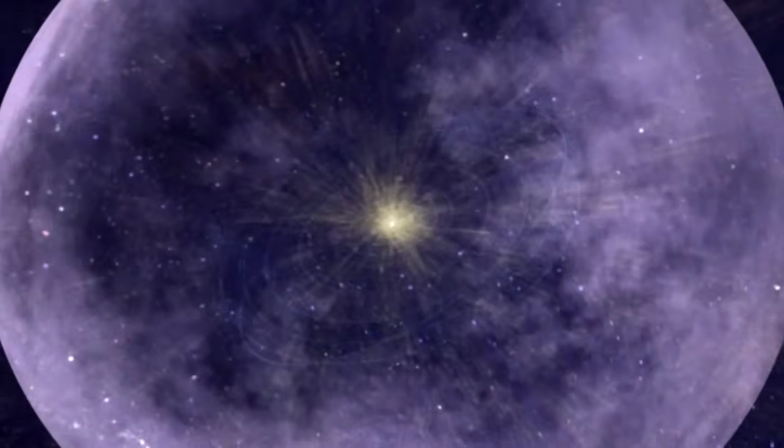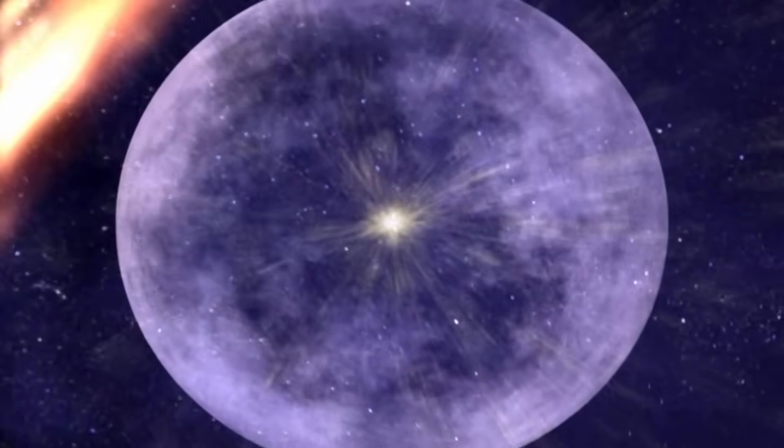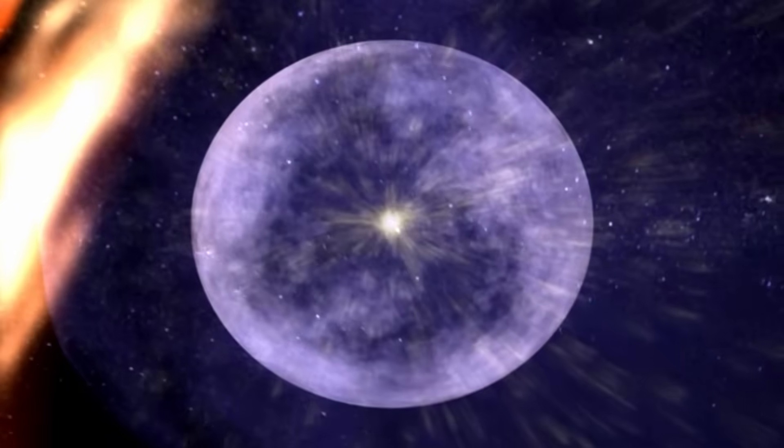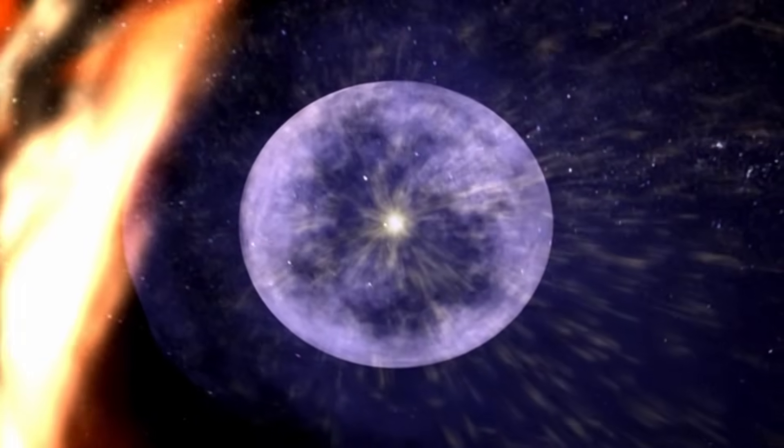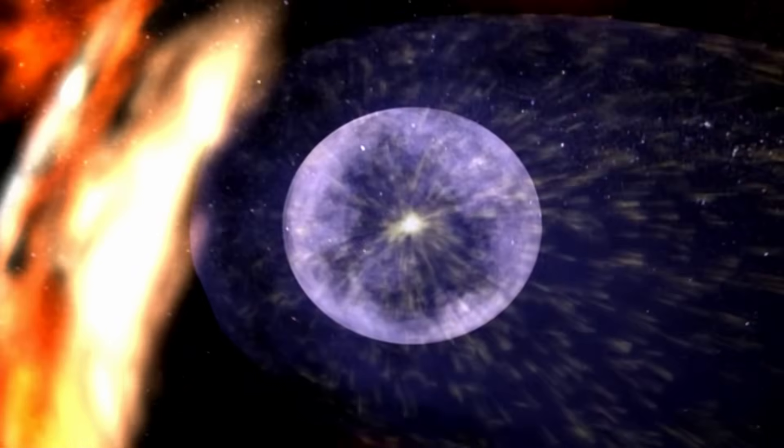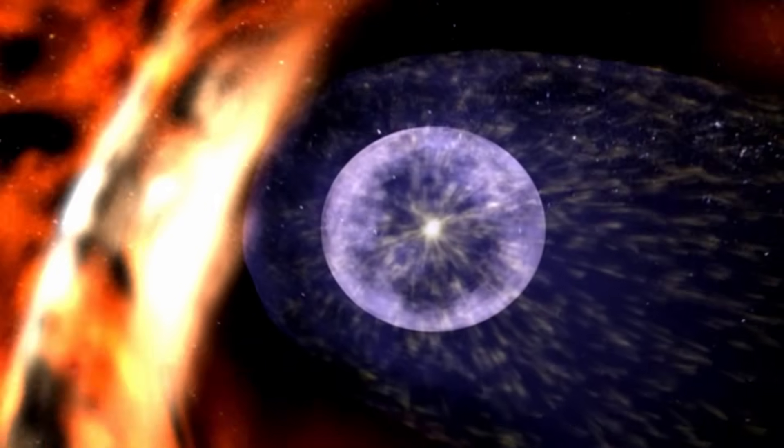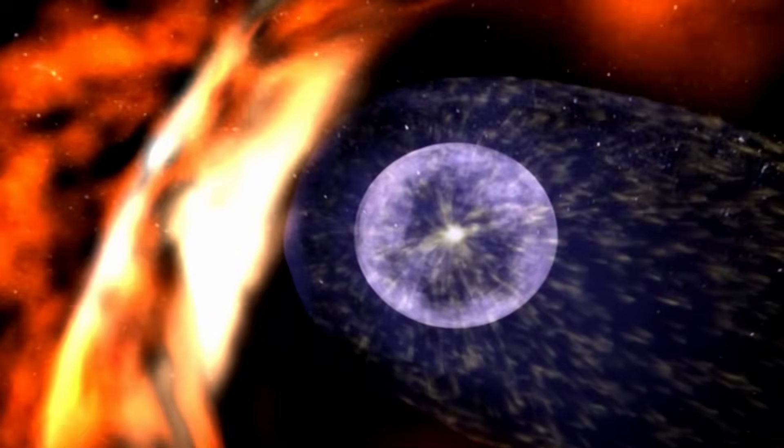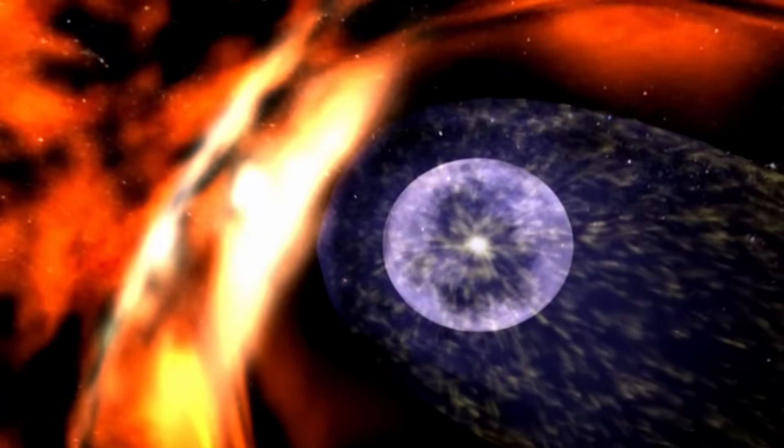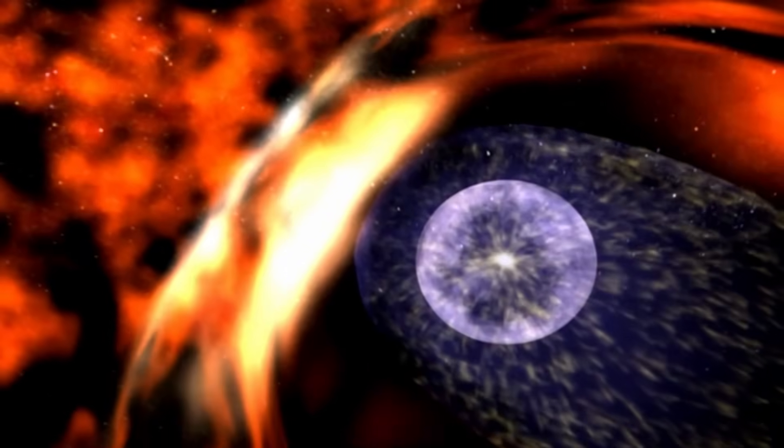Scientists believe there are two primary mechanisms behind this heating. The first is plasma compression. The slowing solar wind crashes into the denser interstellar medium coming from outside, causing a pileup. This cosmic collision compresses the plasma and heats it excessively.